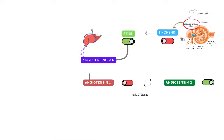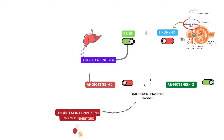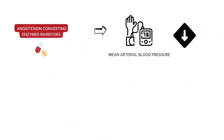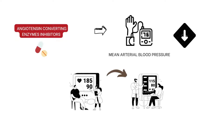The enzymes that convert angiotensin-1 into angiotensin-2 are angiotensin-converting enzymes, and the drugs that inhibit the effects of these enzymes are angiotensin-converting enzyme inhibitors, or ACE inhibitors. ACE inhibitors effectively lower the mean arterial blood pressure as well as systolic and diastolic blood pressure, both in hypertensive and normotensive patients.